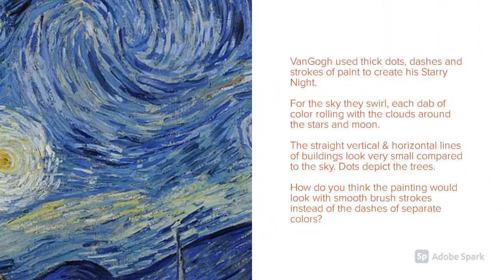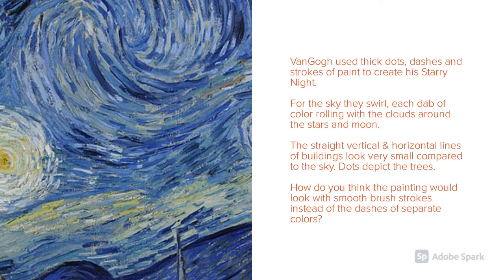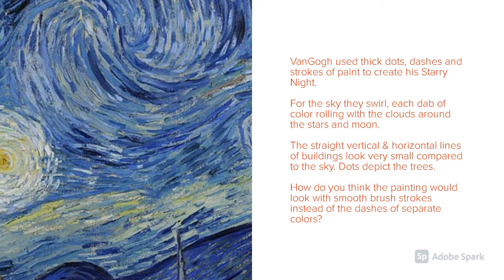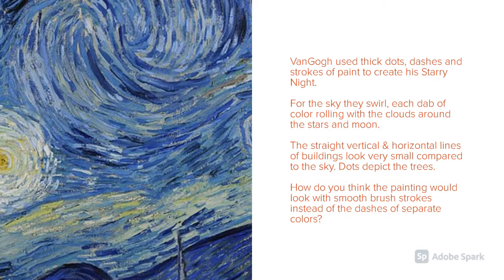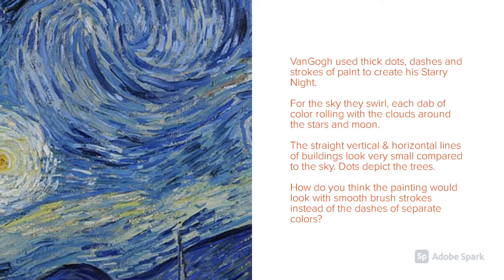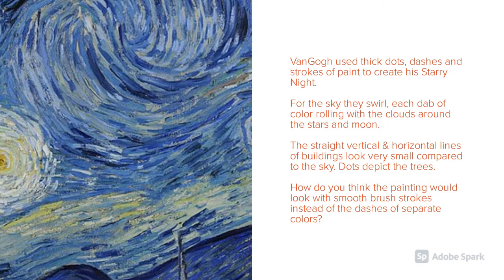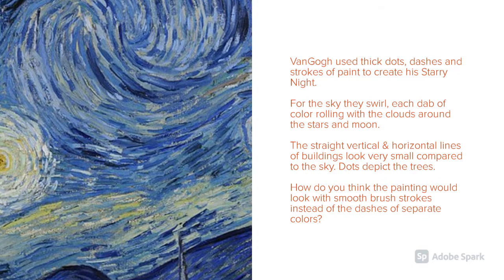Van Gogh used thick dots, dashes, and strokes of paint to create his Starry Night. For the sky, they swirl — each dab of color rolling with the clouds around the stars and the moon. The straight, vertical, and horizontal lines of the buildings look very small compared to the sky. Dots depict the trees. How do you think the painting would look with smooth brush strokes instead?